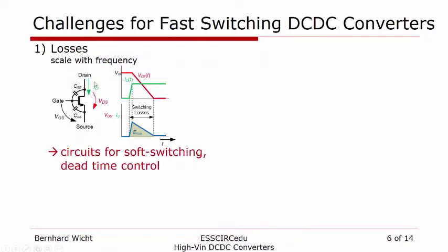One example is shown here. During the switching transition, the current and the voltage are non-zero, which forms a loss triangle referred to as switching losses. So even though the switch has very low static losses, there are switching losses. There are a couple of concepts to address those losses, which we will discuss in a moment.